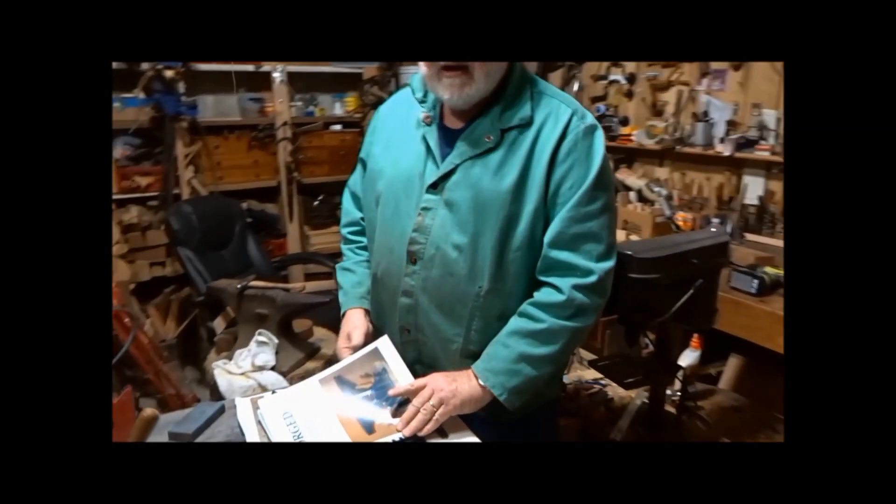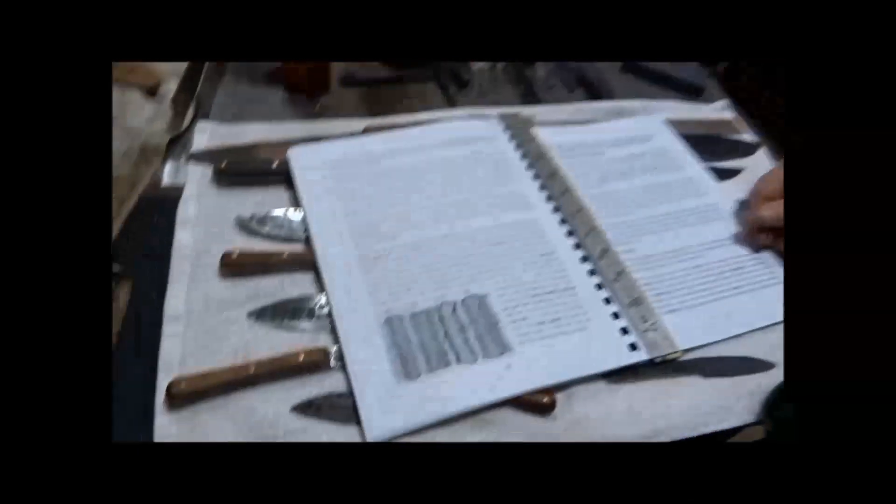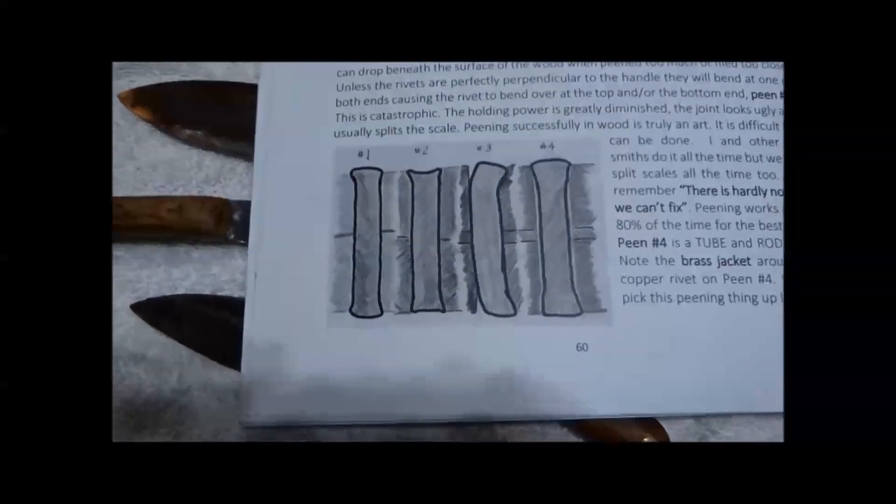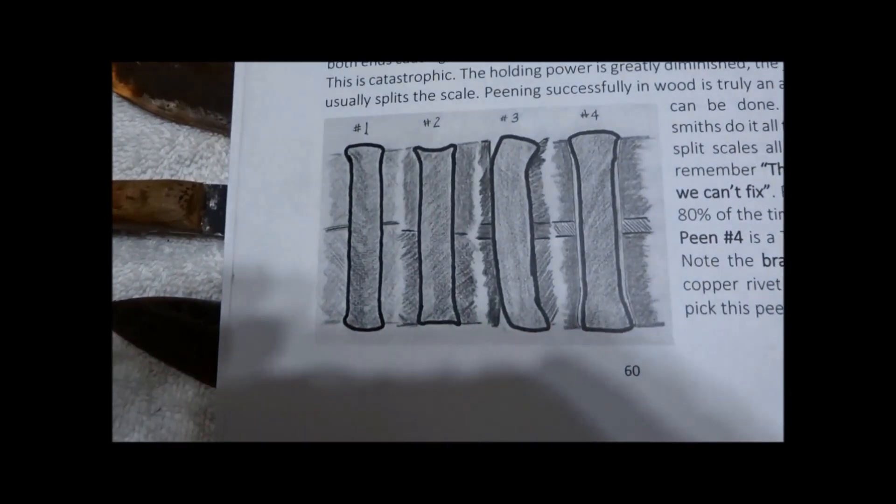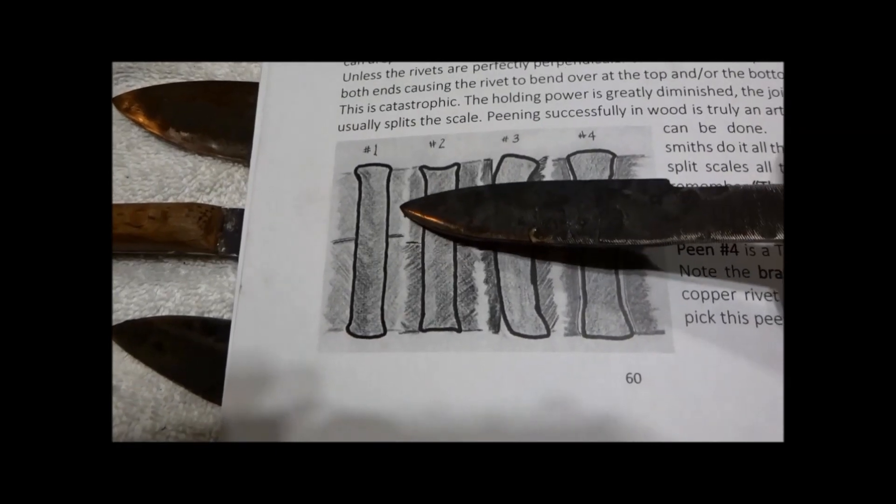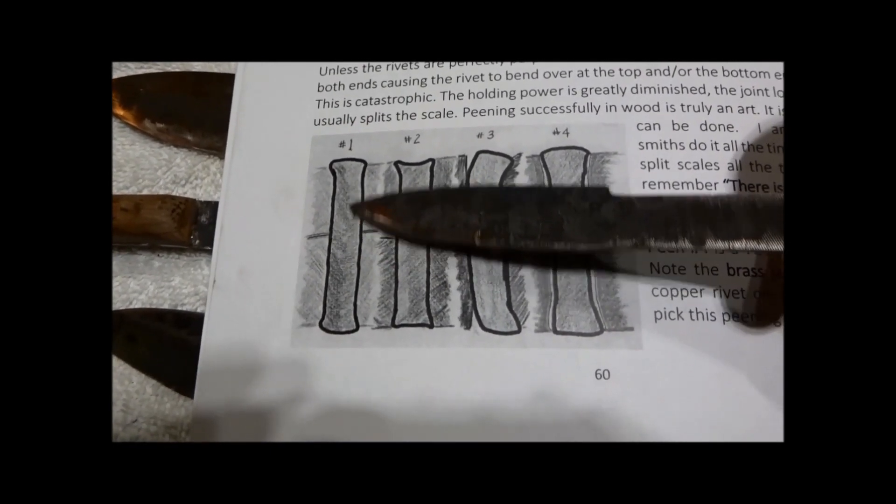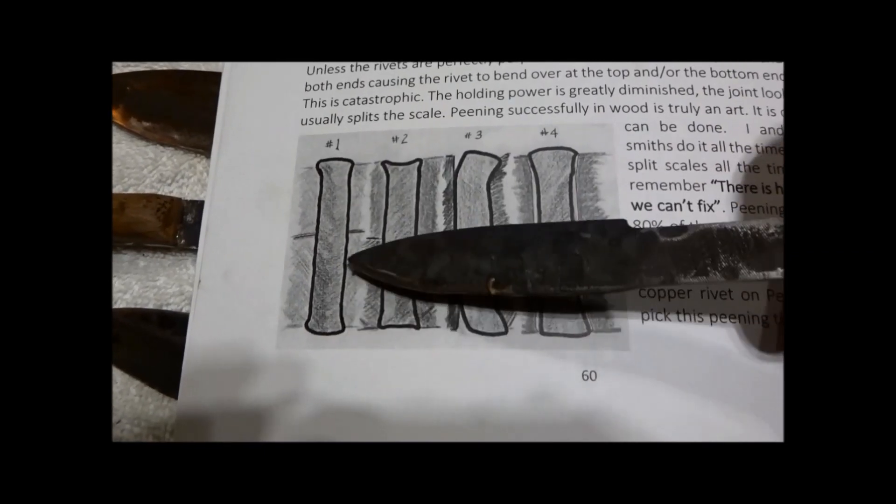Rivets are an ancient method to attach your scales to your handle. But there's problems. When we rivet metal to metal, there's rarely any problem. There's the rivet, head, head, metal, metal.